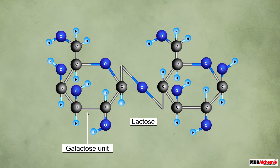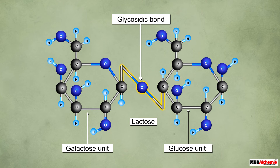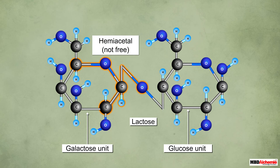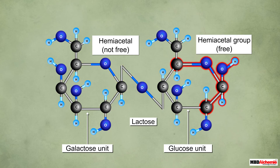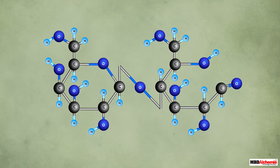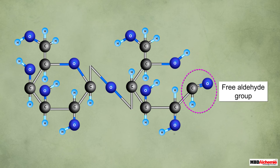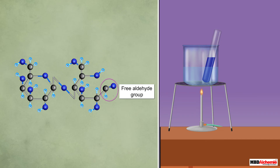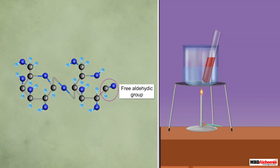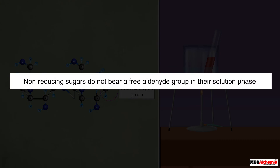Similar to maltose, lactose is also a disaccharide with one galactose unit and one glucose unit joined together by a glycosidic bond. Both galactose and glucose have one hemiacetal group; however, the hemiacetal group of the galactose unit takes part in the glycosidic bond formation, whereas the hemiacetal group of the glucose unit remains free. The ring of the glucose unit of lactose opens up in the solution phase and its free hemiacetal group changes to a free aldehyde group. The free aldehyde group enables lactose to be oxidized by Fehling's solution, thus making it a reducing sugar.